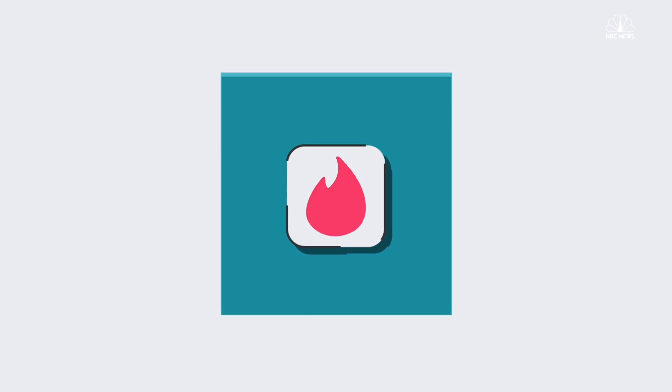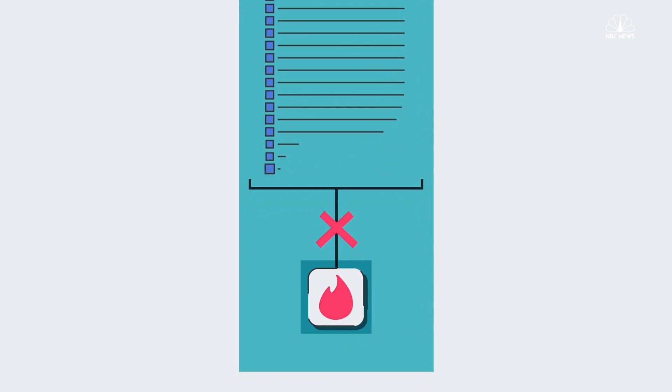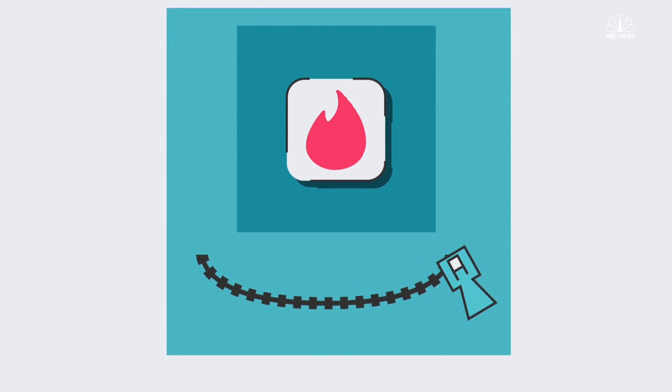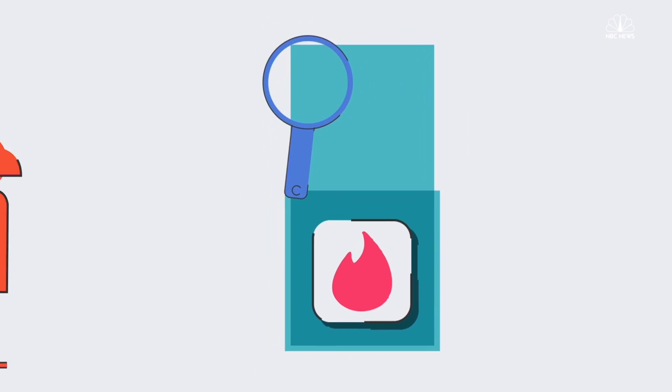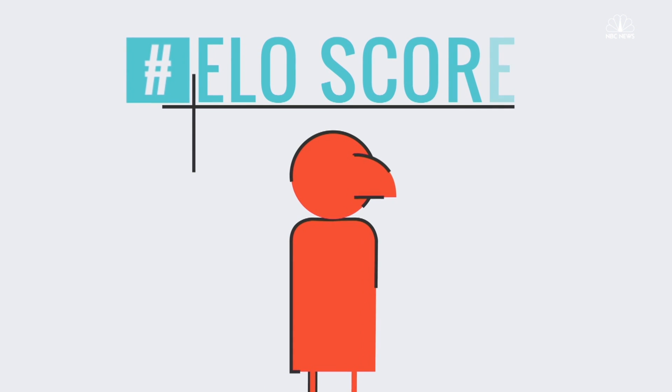Then there's Tinder, which prides itself on not requiring a 400-question registration process. But Tinder is much more closed-mouth than OkCupid about how it calculates matches. Tinder's co-founder did reveal to Fast Company that each user has a secret numerical rating, what the company internally calls an ELO score.